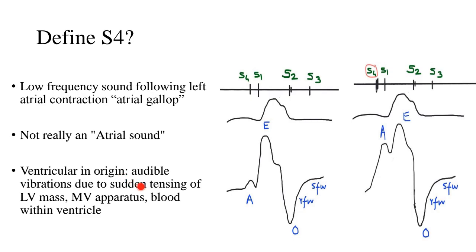What happens is, when there is a very fast and forceful atrial contraction, there is a lot of blood which enters the left ventricle in the end of diastole. So there is, as a result, audible vibrations which are set up because of sudden tensing of the LV mass, the mitral valve apparatus, and the blood itself within the ventricle.